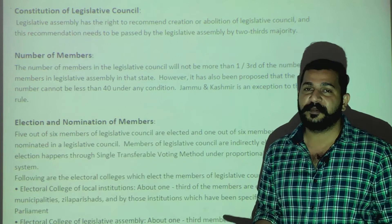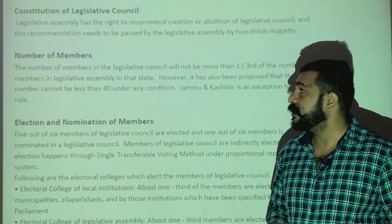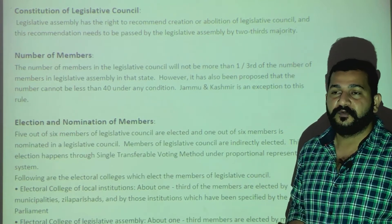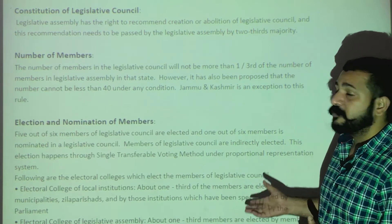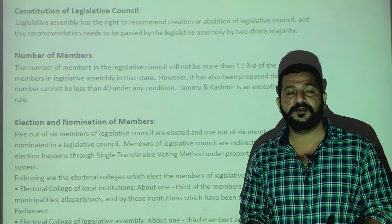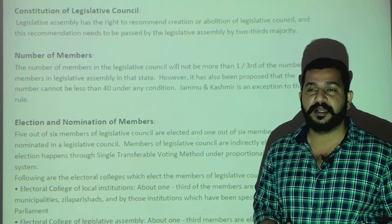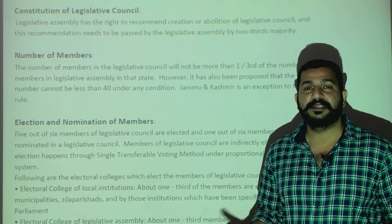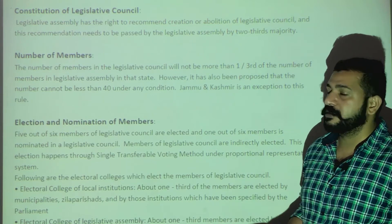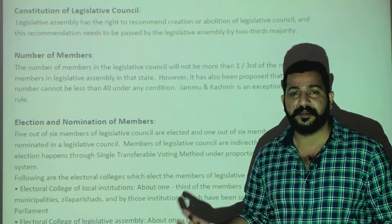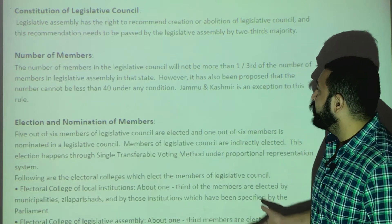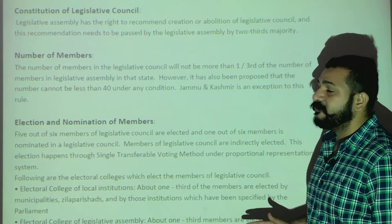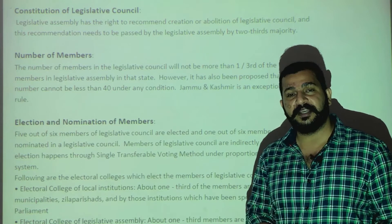So the Legislative Assembly can recommend the formation of a Legislative Council, but at least two-thirds of the members of the Legislative Assembly must approve the recommendation to create it. Regarding the number of members in the Legislative Council: the minimum is 40 and the maximum is one-third of the Legislative Assembly members, which cannot exceed 500.